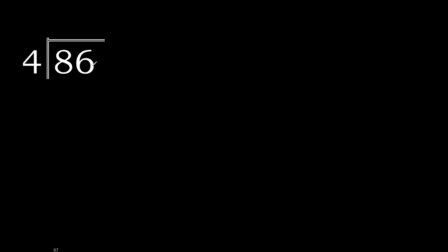86 divided by 4. 8 is not less, therefore with 8: 4 multiplied by which number is nearest to 8 but not greater?